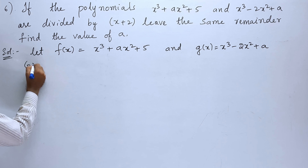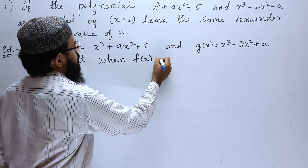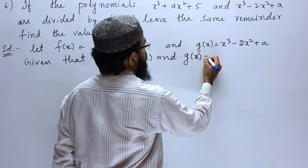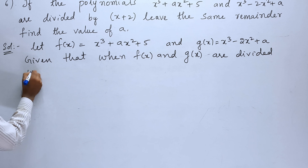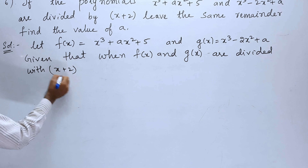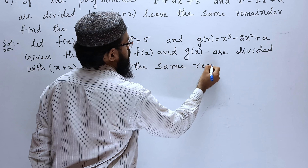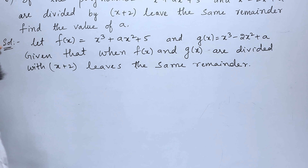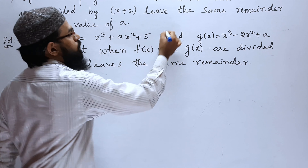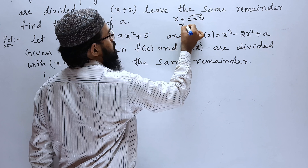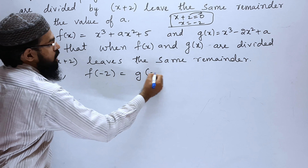Given that when f(x) and g(x) are divided by x + 2, they leave the same remainder. The remainder when dividing by x + 2 means we set x + 2 = 0, so x = −2. Therefore f(−2) = g(−2).